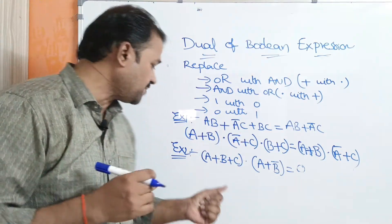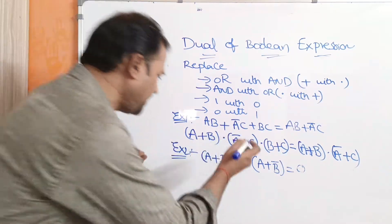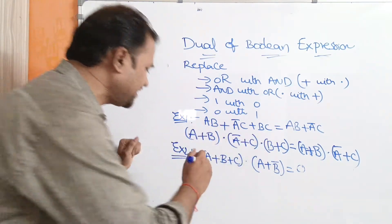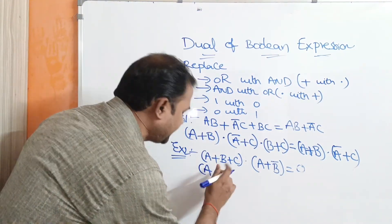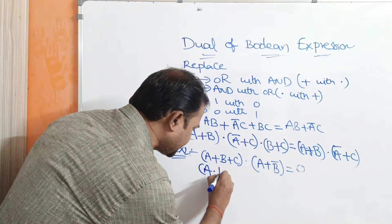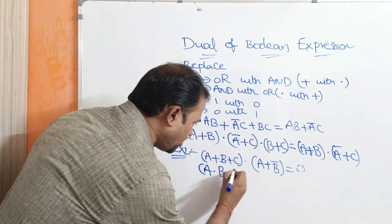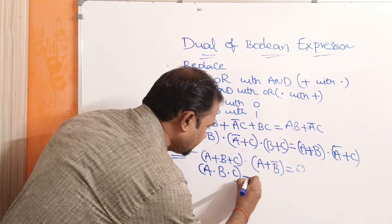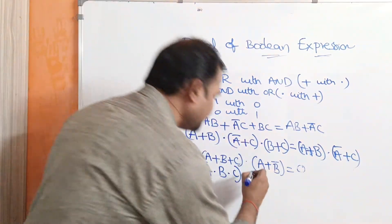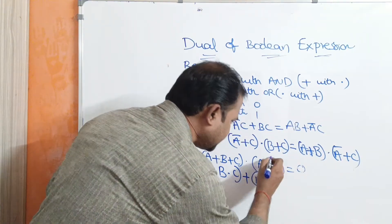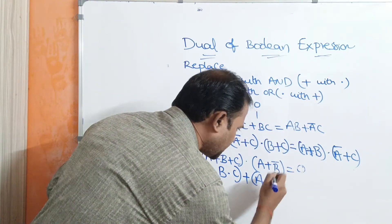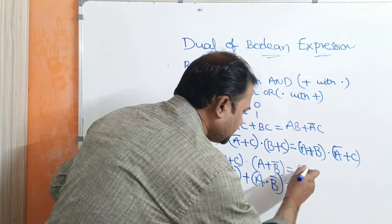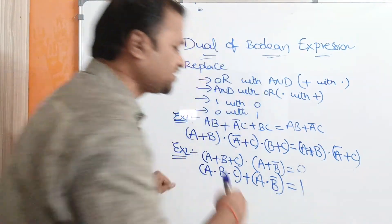Now let us see the second example: A plus B plus C. We need to find the dual of this Boolean expression. Write A as it is. Dual of plus is dot. Next, B — dual of plus is dot. Next, write C as it is. Next, write A as it is — dual of plus is dot. Next, B bar — write it as it is. It is equal to 0, so that 0 should be replaced with 1.